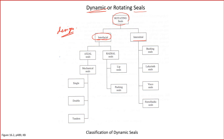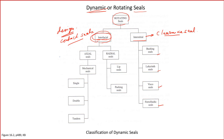Interfacial seals are also known as contact seals, and interstitial seals are known as clearance seals. Interstitial types include bushing seals, labyrinth seals, visco seals, and ferrofluidic seals. Interfacial types include axial and radial mechanical seals, lip seals used in bearings, and packing seals. That is all for today; in the next lecture more of the seals topic will be covered.